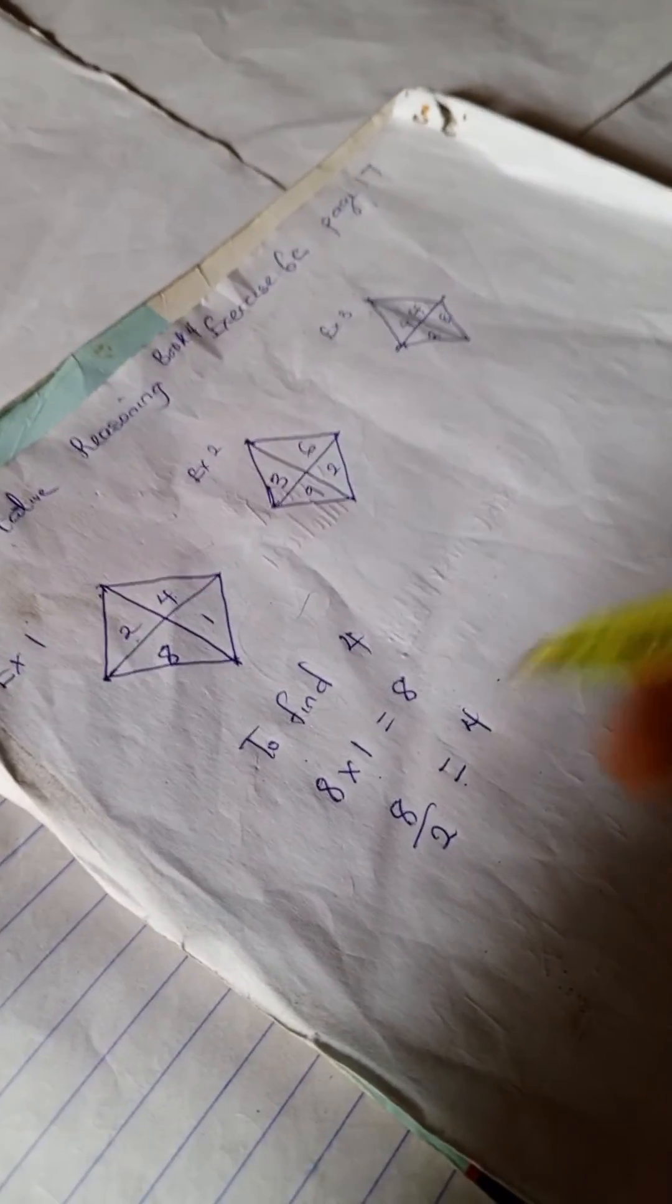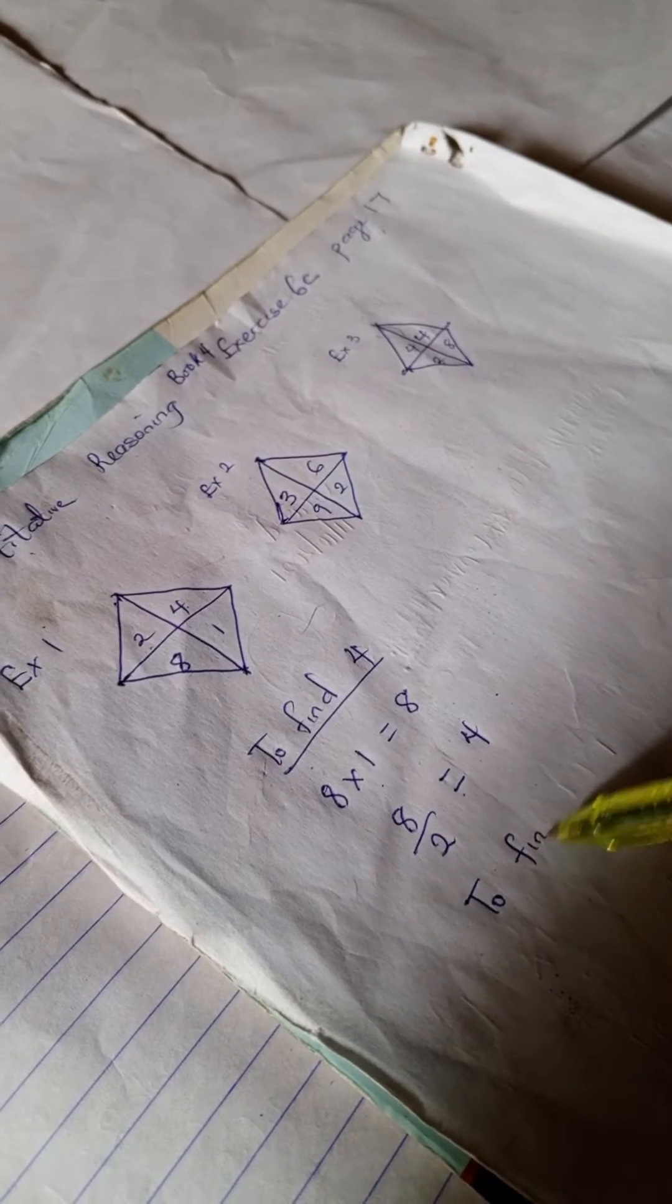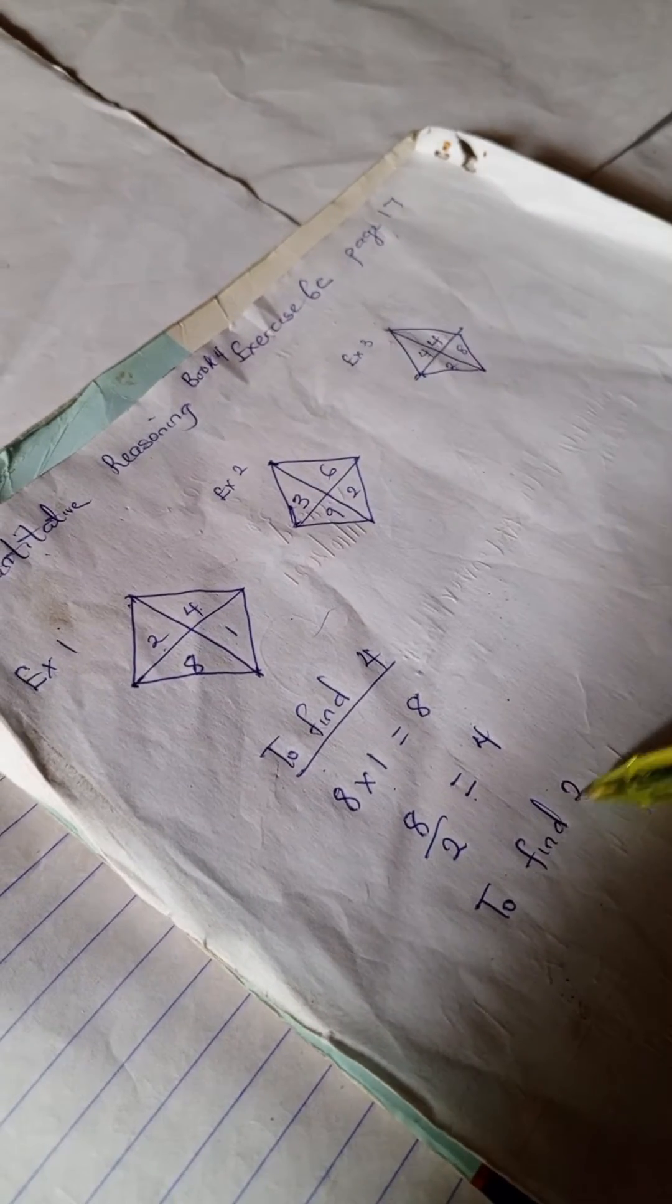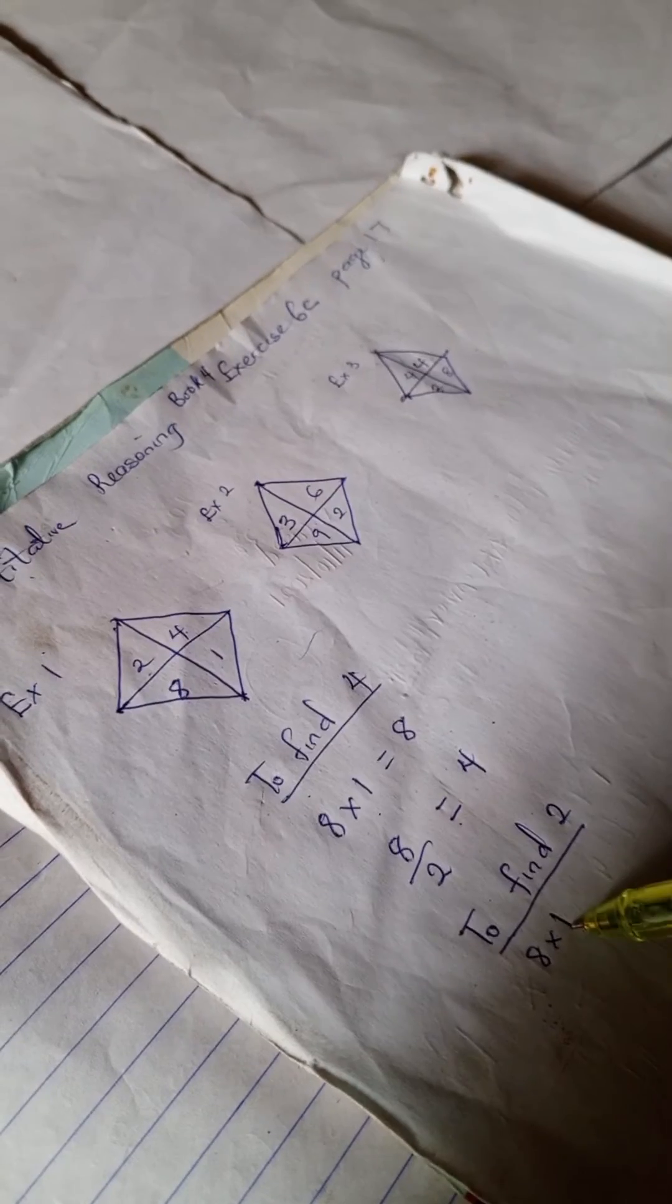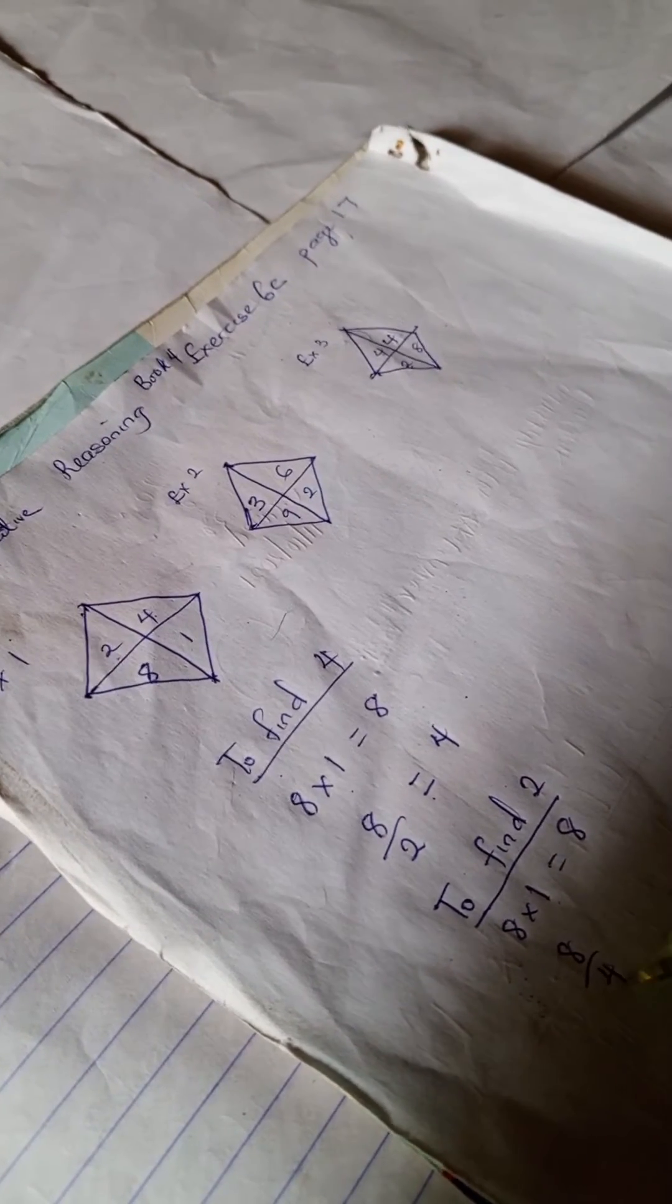have 4, right? To find 2, you have the same thing: 8 times 1 is 8, 8 divided by 4